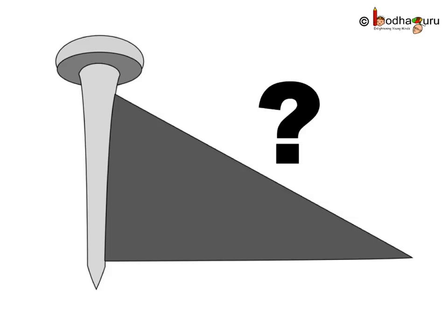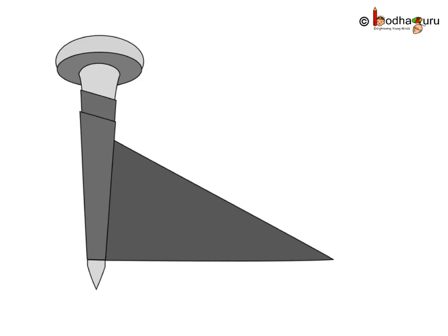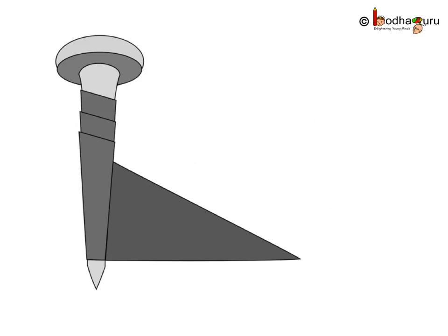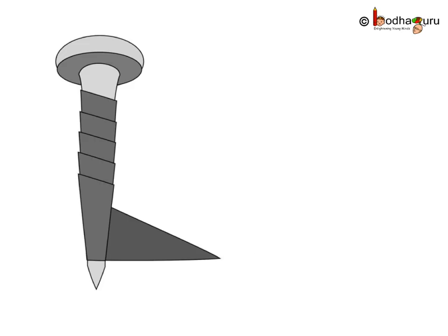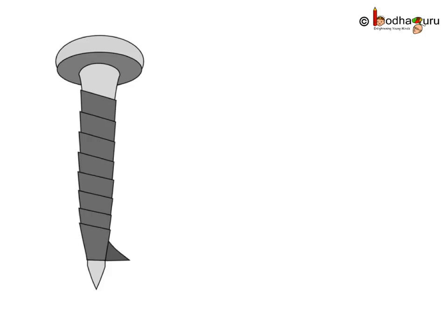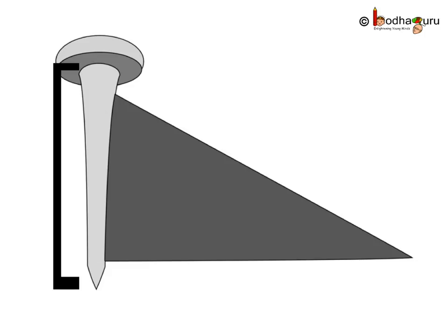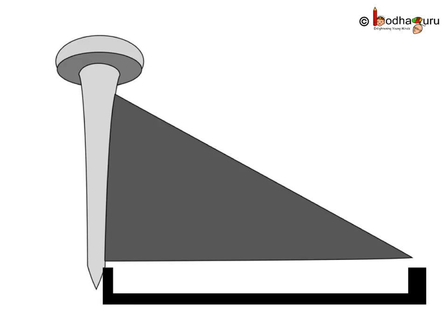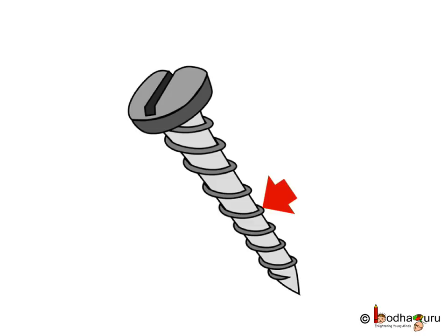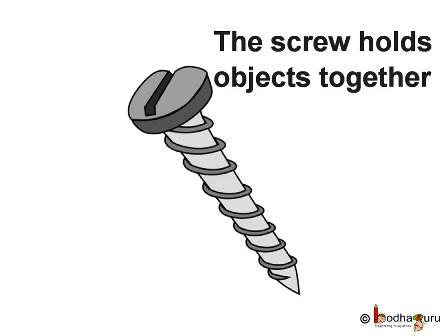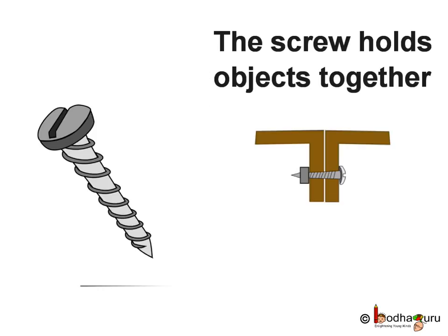Surprise, right? How is a screw related to an inclined plane? Imagine you are folding a paper around a rod at a slanting angle, so that the paper goes all around the rod. If you remove the paper, you will see that in a small length of the rod, a large length of paper fits in. These threads are nothing but very similar to that paper — in a small length, a larger number of threads fit in, and that is what makes the screw hold objects together.